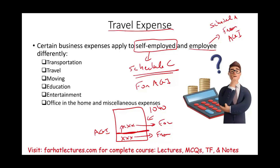In the prior session we looked at transportation expense for self-employed versus employee — basically transportation going from point A to point B. In this session we look at travel, and we need to know that travel is different from transportation. Some students mix the two up, but travel is totally different — travel is more encompassing and includes hotels, lodging, as well as meals.